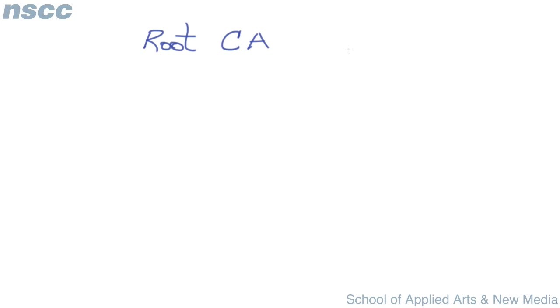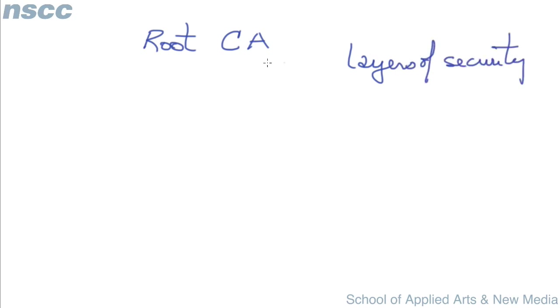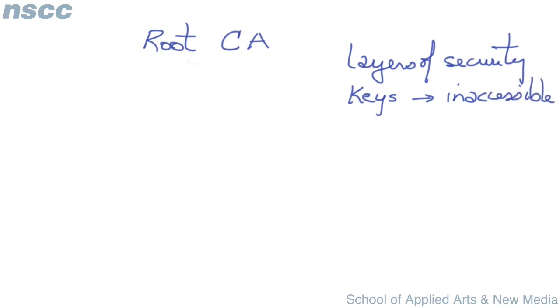Root CAs — their certificates have to be kept behind numerous layers of security. Because the private keys of root certificates, we have to make sure that they're absolutely inaccessible. If the private keys are compromised, all the certificates based on that root CA are compromised as well.